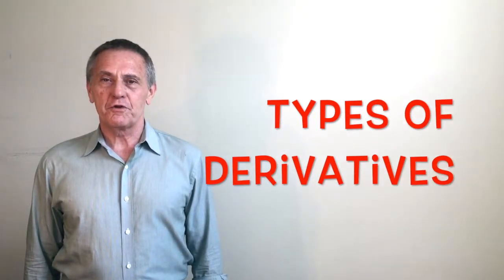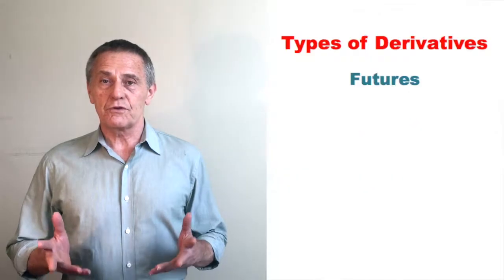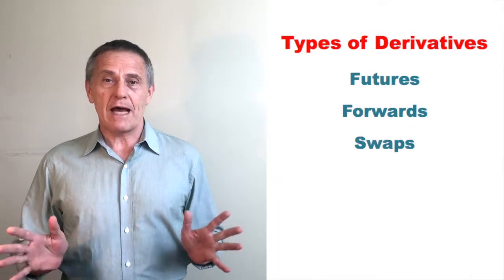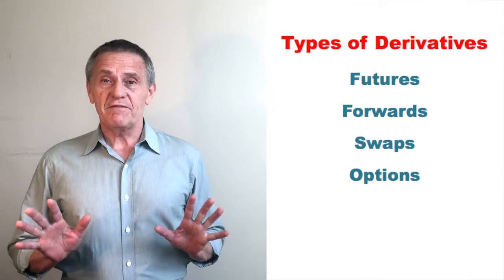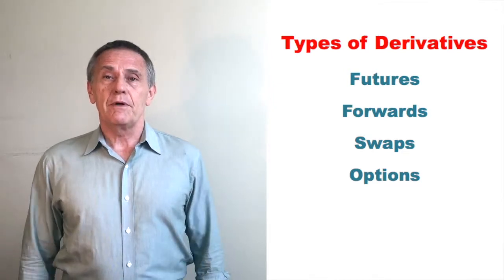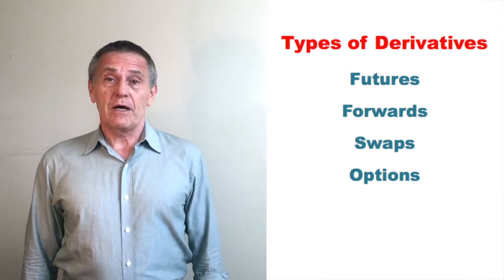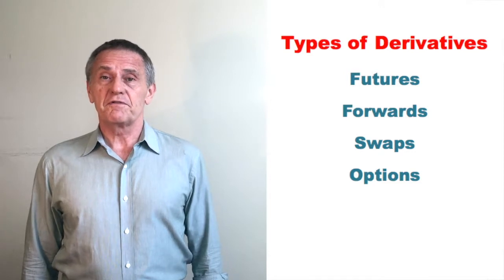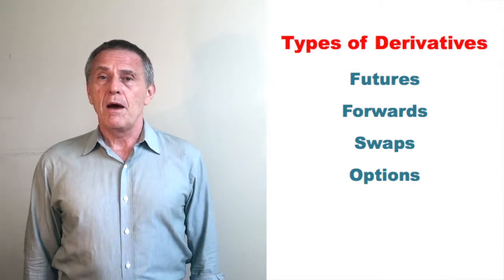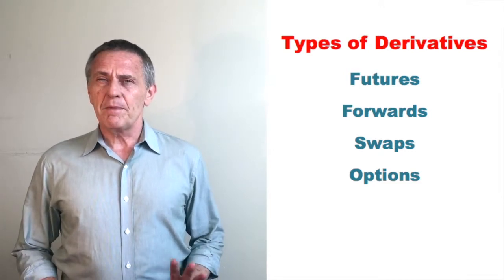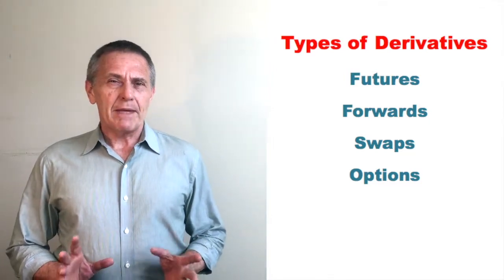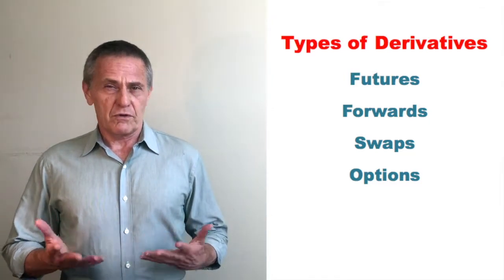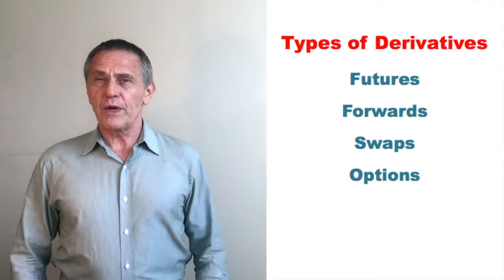How many different kinds of derivatives are there? There's futures, forwards, swaps, options, and of course there are many variations of each type. So in a sense there may be hundreds, indeed thousands, of different variations. But thinking of them as futures, forwards, and options is not maybe the most insightful or informative way to think about them.